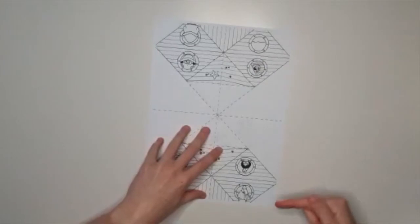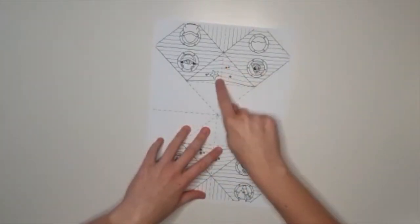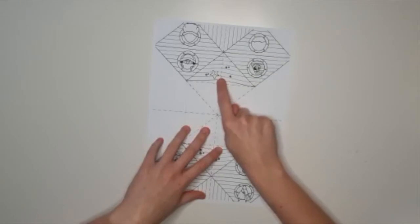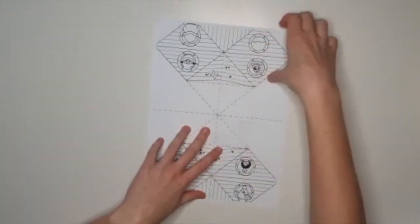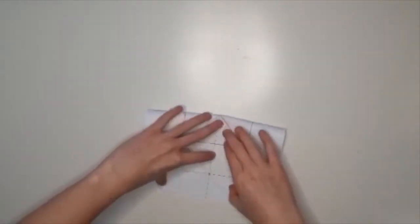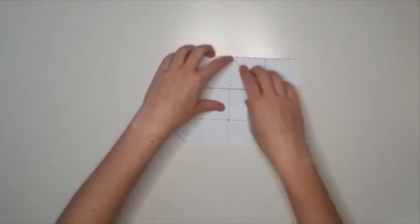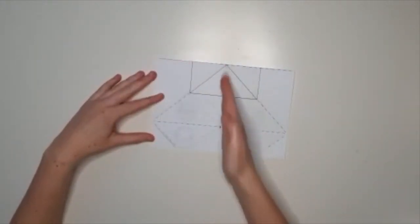First, fold your paper in half, like so. Make sure that the starfish and your little sailor in the porthole is facing away from you. Once you've folded it in half, you want to fold it in half again this way, down this line.